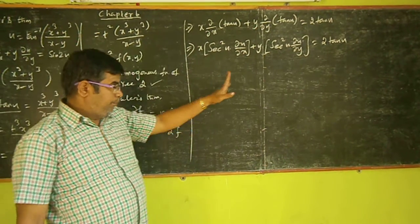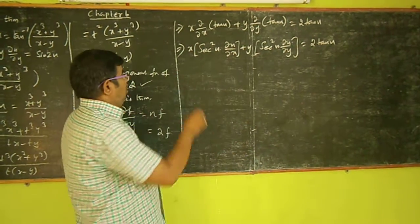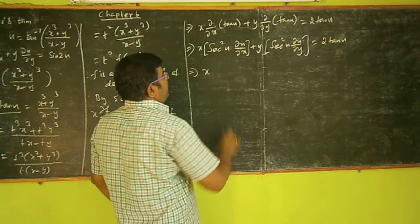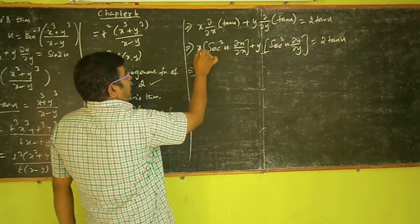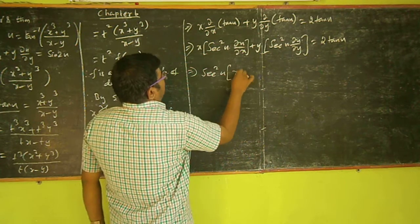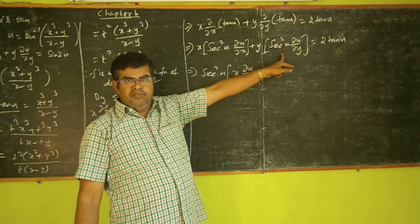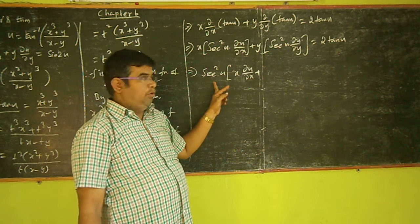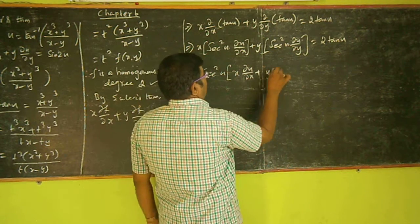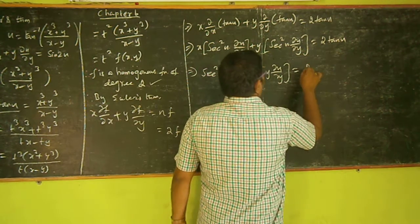There are no partial derivatives on the right hand side. Therefore we can write it as 2 tan u. Taking sec² u common: sec² u into x into ∂u/∂x plus y into ∂u/∂y is equal to 2 tan u.